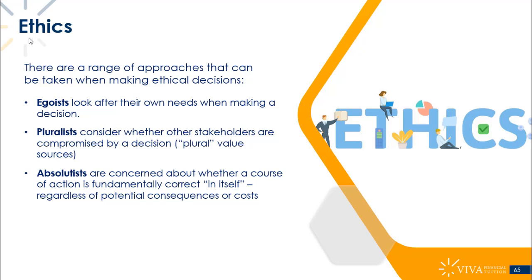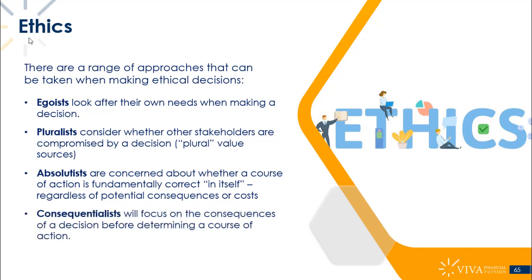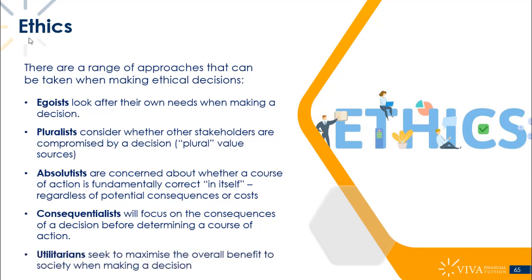Consequentialists primarily focus on the consequences of a decision before determining a course of action. In the murderer example, that would be a consequentialist decision — you're thinking about what will happen if you tell the lie versus if you tell the truth, and the consequences are what determine the relevant course of action.